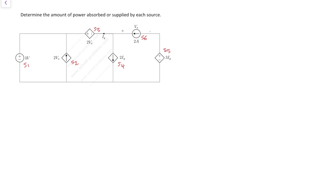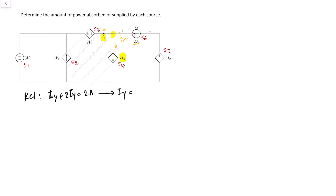Let's start with Iy. We have two Iy here. If we write KCL at this node, we know the current coming into this node. This current is 2A from the independent current source, and it goes as 2Iy in one direction and Iy in the other. So KCL gives us: Iy plus 2Iy equals 2A, therefore Iy equals 2/3 A.